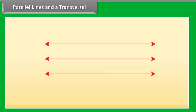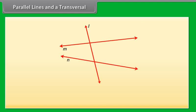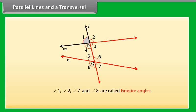We have studied that a line which intersects two or more lines at distinct points is called a transversal. Here, line L intersects lines M and N at points P and Q respectively. Therefore, line L is a transversal for lines M and N. Four angles are formed at each of the points P and Q. Let us name these angles as angle 1, 2, 3, 4, 5, 6, 7 and 8. Angles 1, 2, 7 and 8 are called exterior angles, while angles 3, 4, 5 and 6 are called interior angles.